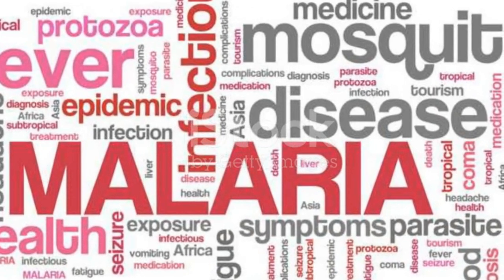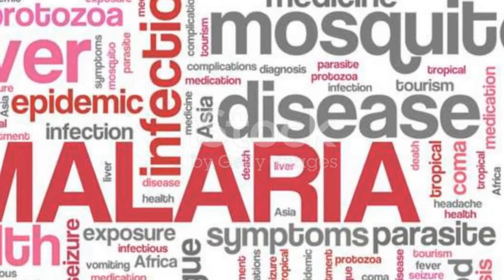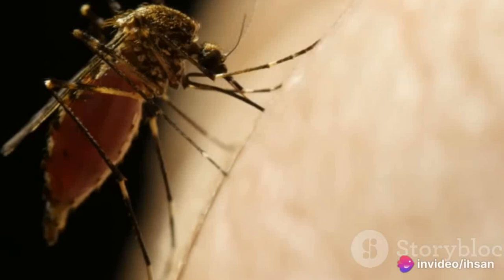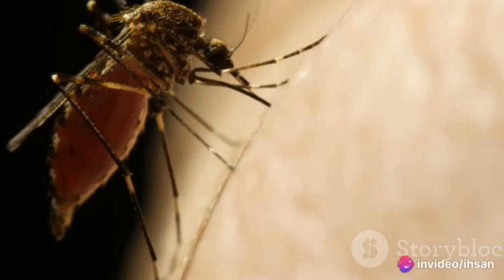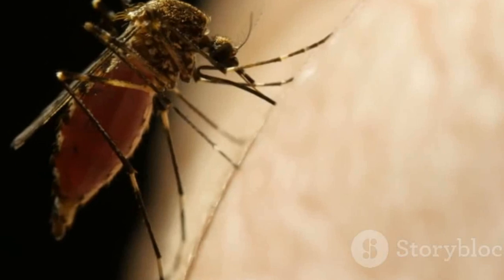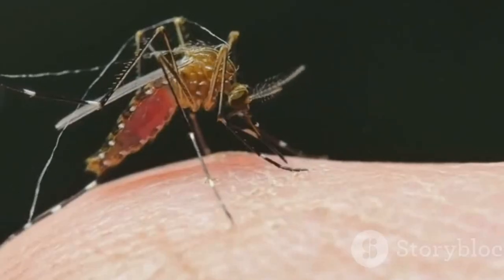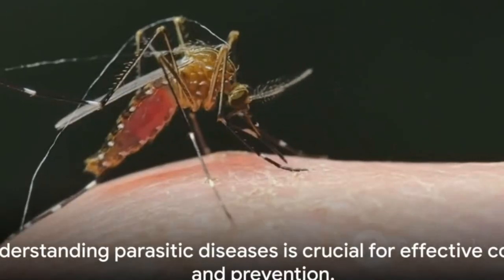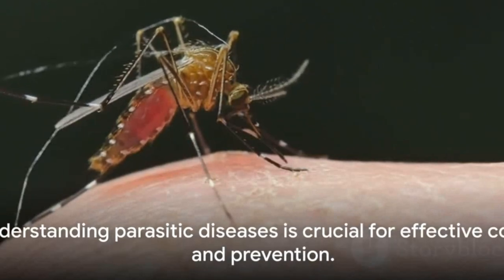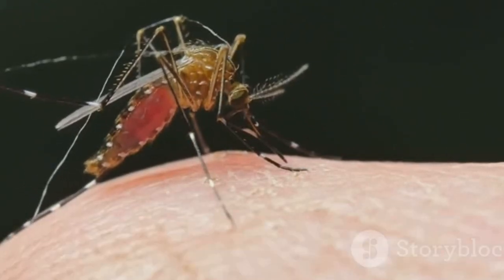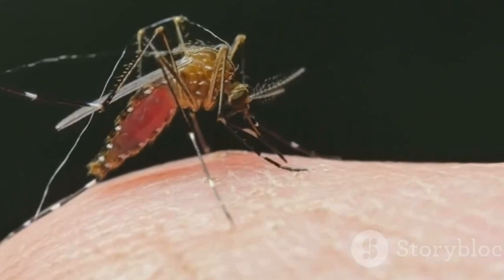For instance, malaria, a disease caused by the protozoan parasite Plasmodium, is most common in sub-Saharan Africa. Similarly, neglected tropical diseases, a group of parasitic and bacterial diseases, are most prevalent in the world's poorest regions. Parasitic diseases pose significant challenges to global health, but understanding them is the first step towards effective control and prevention.